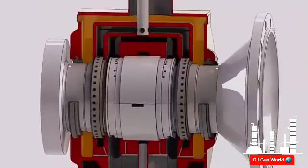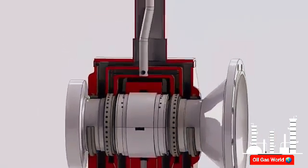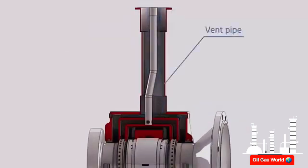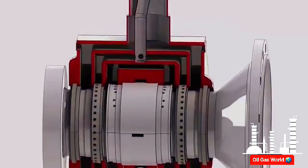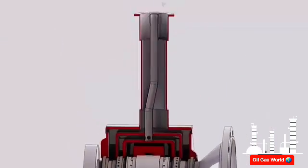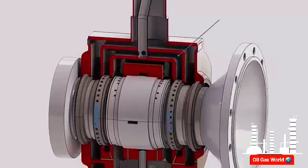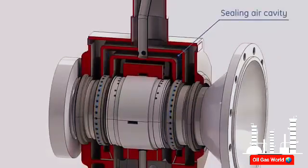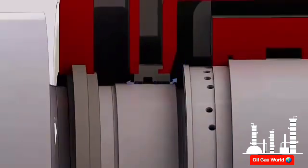A brush seal is installed on both labyrinth seals to minimize air leakage as much as possible. Bearing 2 has a vented cavity. The compressed air leaking from the outer labyrinth seals is vented to the atmosphere through a vent pipe mounted on the top of the housing. Inboard of the outer air seals, two pressurized labyrinth seals are located for lubricant control. Sealing air supplied through a pipe concentric with the vent pipe fills the sealing air cavity and flows between the two rows of each of the labyrinth seals.